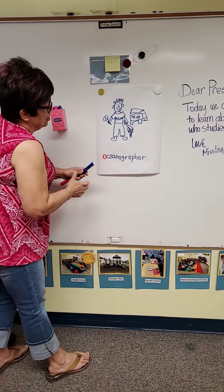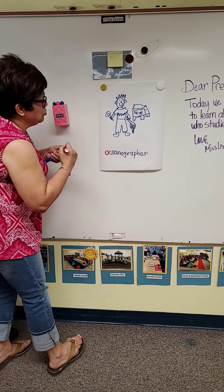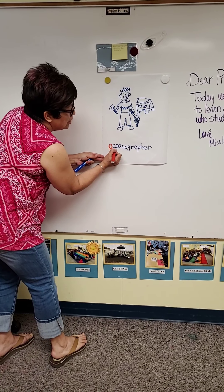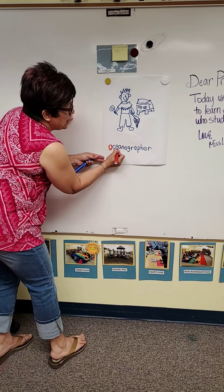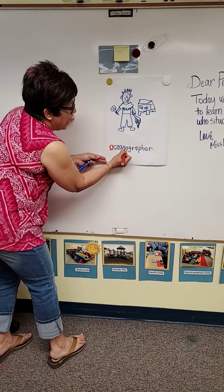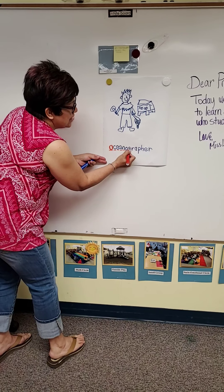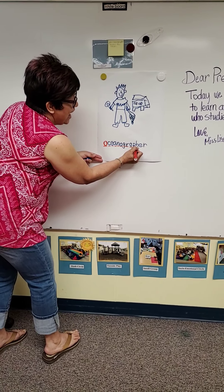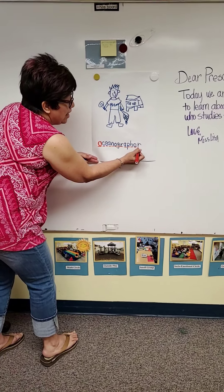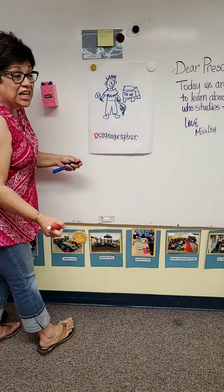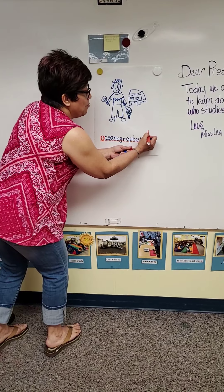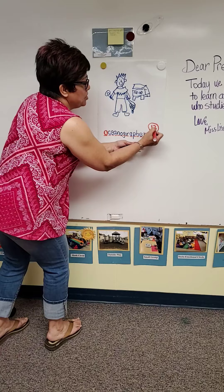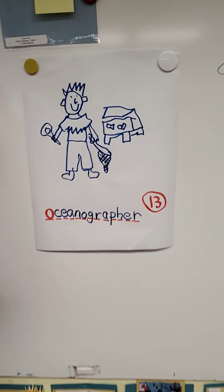Oceanographer. And now let's see how many letters are in oceanographer. Get ready to count with me. 1, 2, 3, 4, 5, 6, 7, 8, 9, 10, 11, 12, 13. Oh my gosh, that is a lot of letters — number 13, a 1 and a 3. So we have 13 letters for oceanographer.